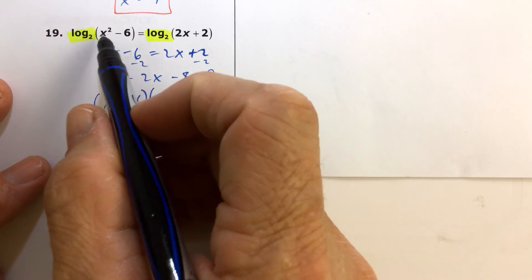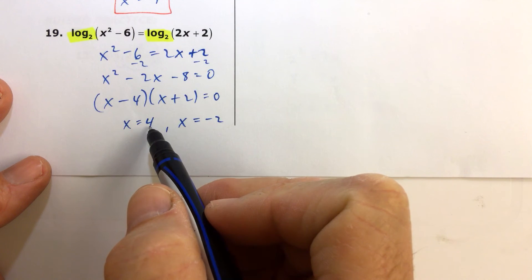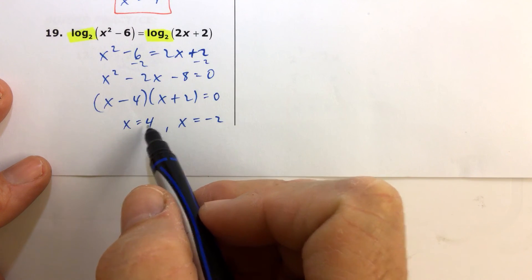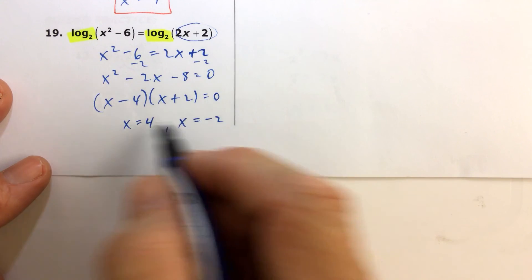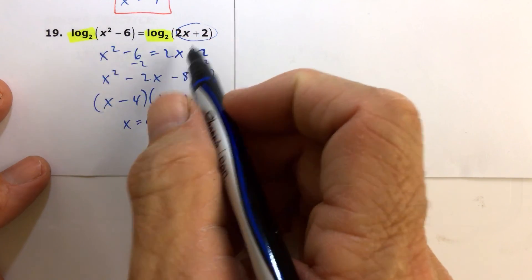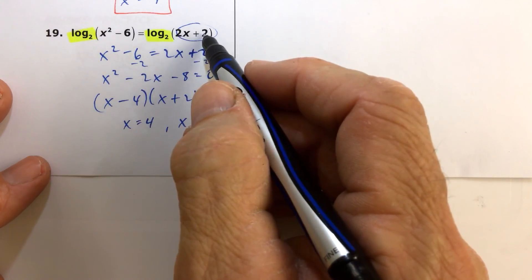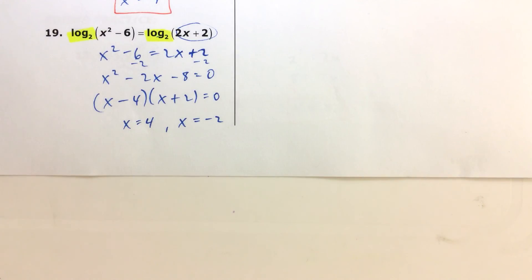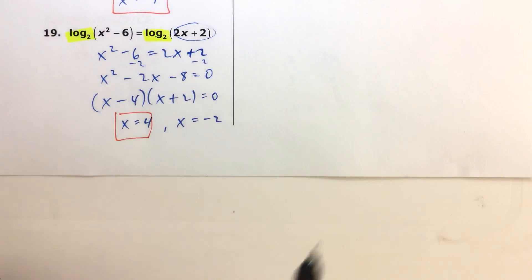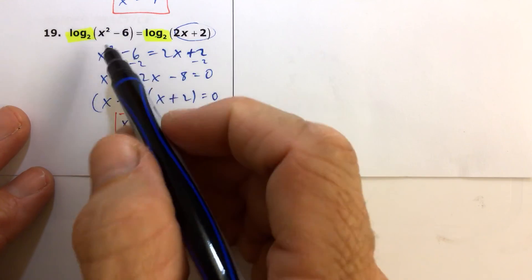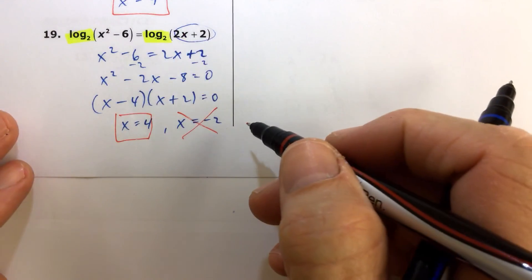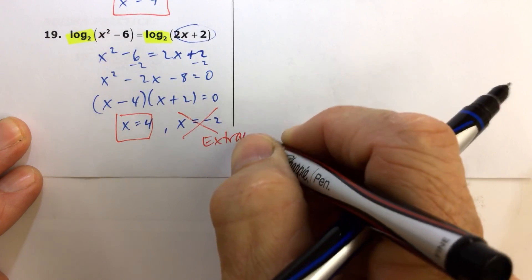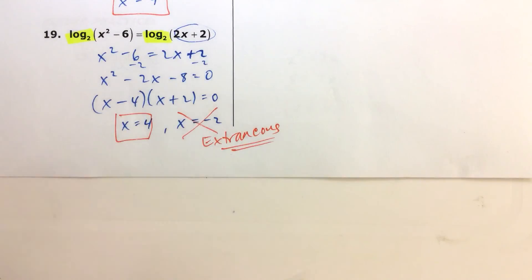Well, remember what I said, you always have to replace x with whatever you get here to see if we get an extraneous solution. Extraneous solutions usually occur when you get two of them like this, and you put one of them in, and it gives you a negative number that you're taking the log of. Like, if I replace x with 4, I get 4 squared is 16 minus 6. That's a positive 10. And then 2 times 4 is 8, plus 2 is 10. So log base 2 of 10 equals log base 2 of 10. So 4 works. However, I'm already looking at this negative 2, and I realize if I take negative 2 and square it, I'm only going to get 4. 4 minus 6 is going to give me a negative number, so I don't even have to replace x with negative 2 on this side, because I know that I can't take the log of a negative number. So therefore, that's extraneous. And x equals 4 is my only solution.